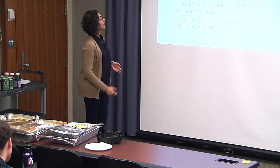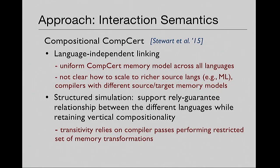In other words, if I introduce one other funky pass into the compositional CompCert pipeline that does something neither memory extensions nor injections were doing before, I would have to go and change the structured simulation and use the new one to verify every pass. Also, the reason CompCert has been feasible is that all of the languages in the CompCert pipeline use exactly the same memory model — C and assembly are not all that far apart, intuitively. It's not clear with this approach how you would scale the compositional CompCert methodology to richer source languages. If you were compiling ML down to assembly, you're dealing with very different memory models.